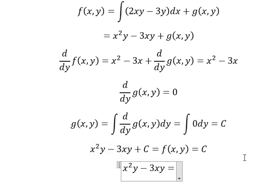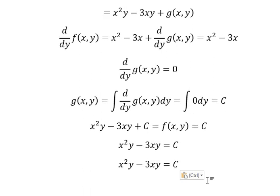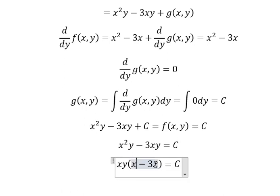And we can simplify like this: x squared y minus 3xy equals C. Now we can do factorization by y: y times x squared minus 3x equals C. This is the final answer. Or maybe we can put x outside too. This is the end.